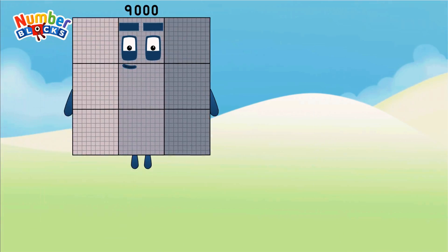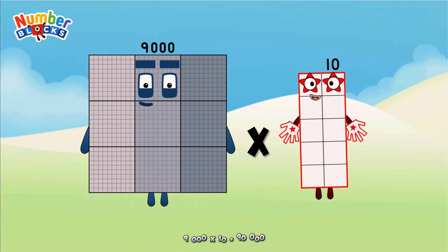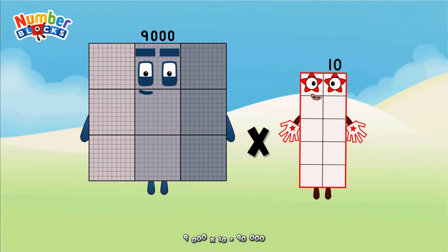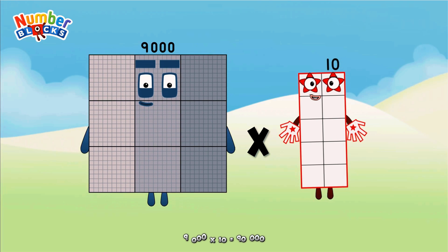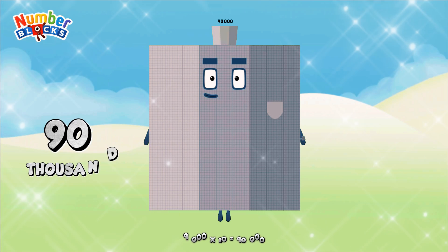Nine thousand, multiplicated by 10, equals ninety thousand.